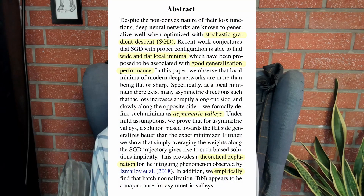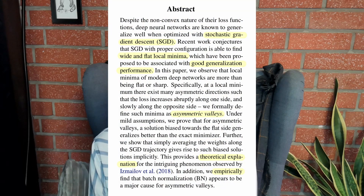At the end of the abstract you also see 'theoretical explanation' and 'empirically', so from that we can infer that the paper will both have mathematical proofs and experiments.